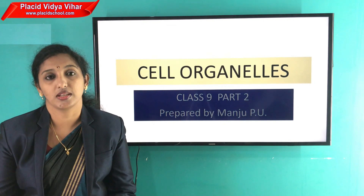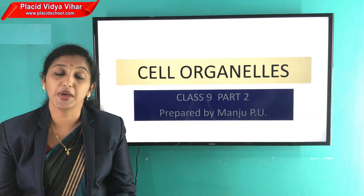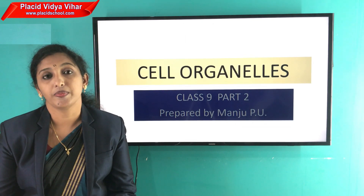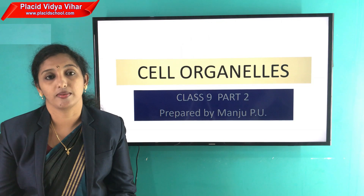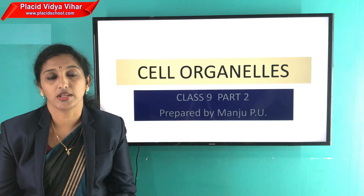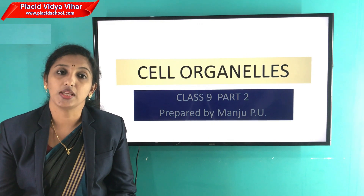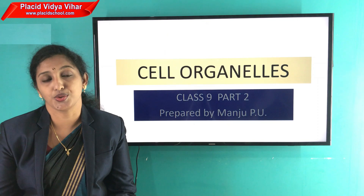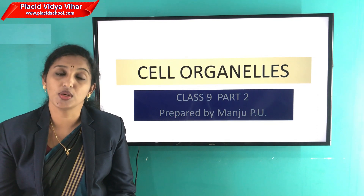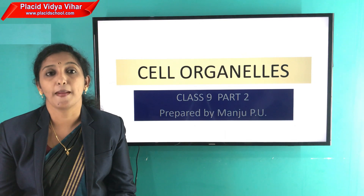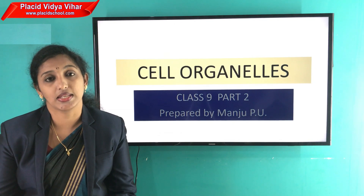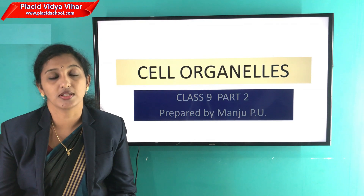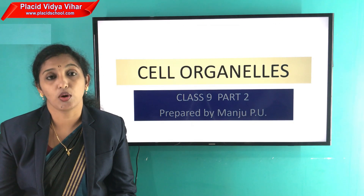We study about the different types of cells based on number, genetic material, and also function. Based on number, organisms are divided into two types: unicellular organisms and multicellular organisms. In unicellular organisms, only a single cell performs all the necessary functions. In multicellular organisms, they have more than one cell.